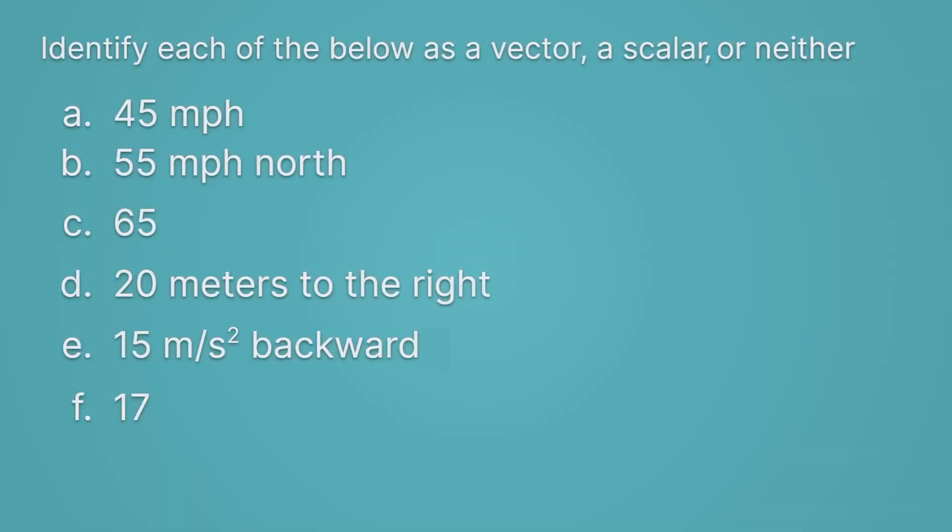Okay, last thing we're going to do here is we're going to look at all of these different numbers. And we're going to identify them as a vector, a scalar or neither. This is another good spot to pause the video and give it a try. Okay, first up, 45 miles per hour. Well, that has a size, 45, and a unit. So that makes it a scalar. It doesn't have a direction.